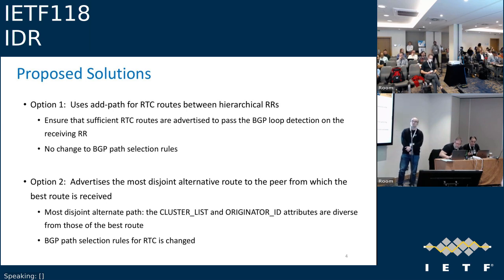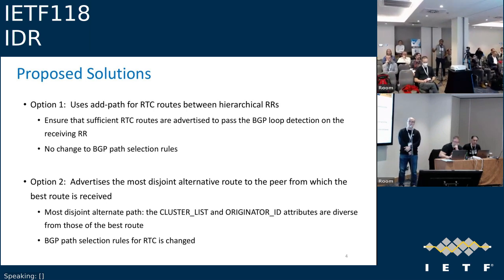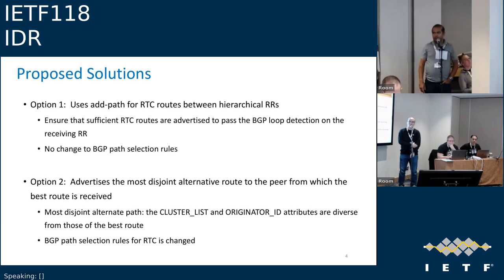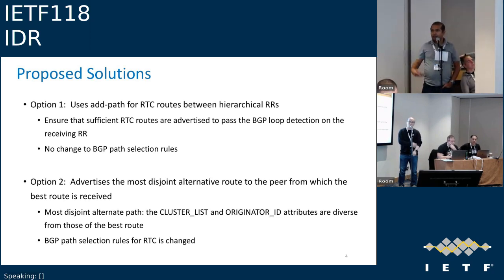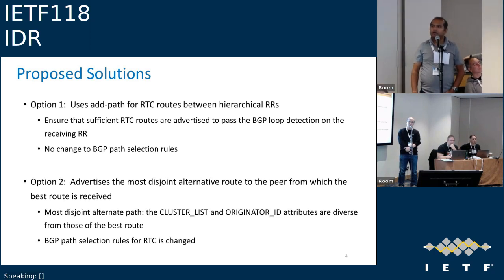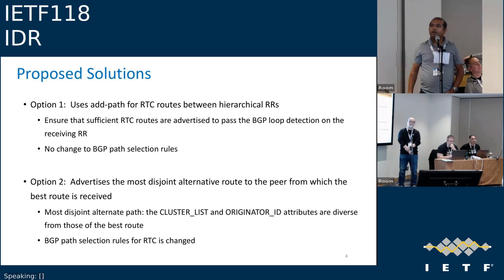Krishnaswamy, Cisco Systems: can't this be treated similar to an AS loop — through policies, you could allow the cluster if you see the same cluster list? This is a different AFI/SAFI — only for the RTC constraint AFI/SAFI — you could allow it, so would you even need any modifications? Have you considered that? Zhidong responds: in some cases there will be a real loop because you need the loop detection rules. Discussion continues on the merits of having a safer solution.